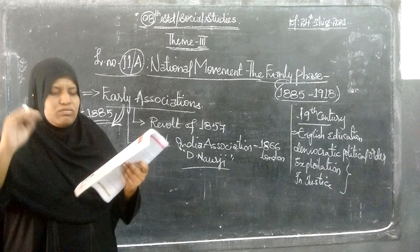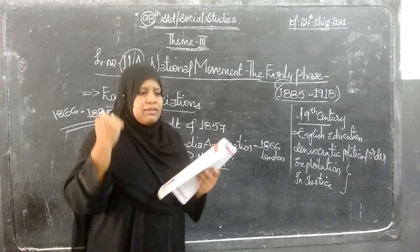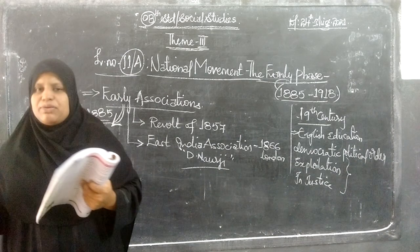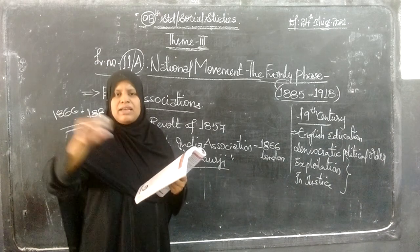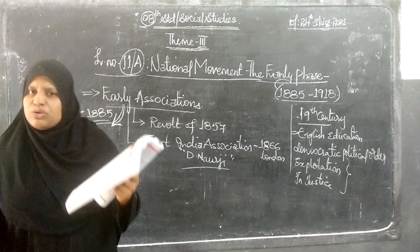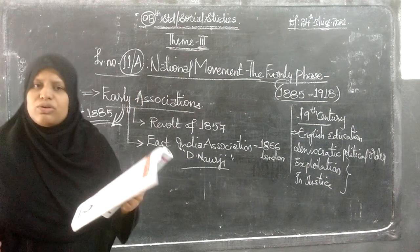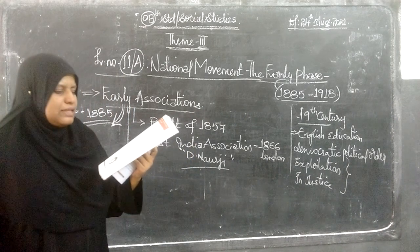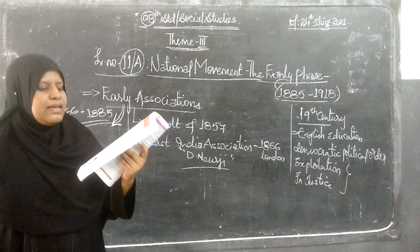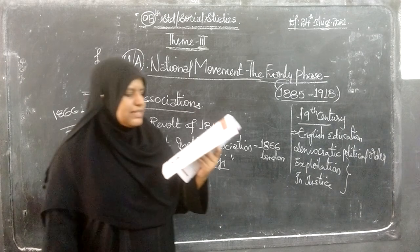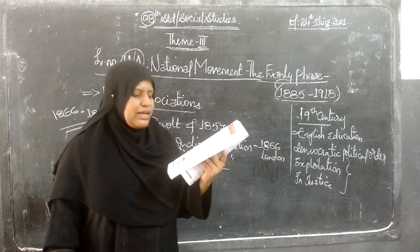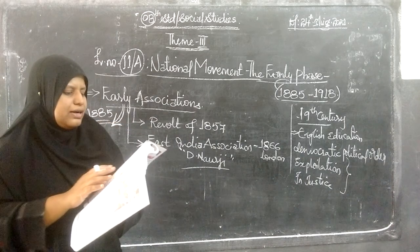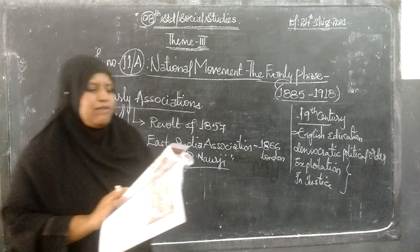These associations had a nationalistic zeal and tried to unite intellectuals. Though many of these associations functioned in specific parts of the country, their goal was stated as the goal of all the people of India — not those of any one region, community, or caste. They worked with the idea that the people should be sovereign — a modern consciousness and a key feature of nationalism.